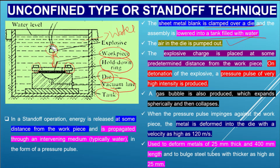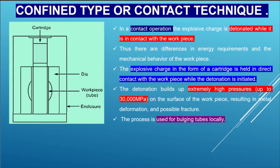On detonation, a pressure pulse of very high intensity is created. A gas bubble is also produced which expands spherically and then collapses. When the pressure pulse impinges on the work piece, the metal is deformed into the die. The forming velocity is usually 120 meters per second. This technique can be used for metals up to 25 mm thick and 400 mm in length. Steel tubes with thickness as high as 25 mm can also be deformed by the unconfined standoff technique.